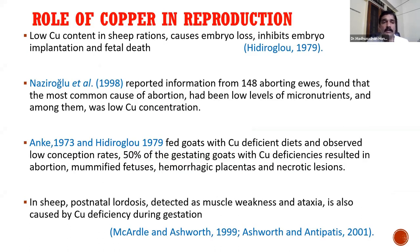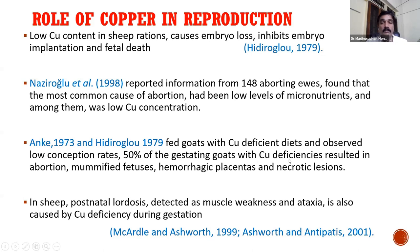Low copper content in sheep causes embryo loss, inhibits embryo implantation, and leads to fetal death. Copper also has a role in immunity but the threshold level is very narrow — only up to 18 mg can be fed before toxicity begins. Research on 148 aborted ewes found abortions associated with low copper concentration. In goats, copper-deficient diets showed low conception rates; 50 percent of gestating goats with copper deficiency resulted in abortion, mummified fetuses, hemorrhagic placentas, and necrotic lesions. In sheep, postnatal lordosis detected as muscle weakness and ataxia is also caused by copper deficiency during gestation.